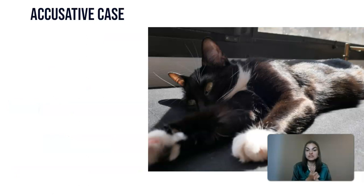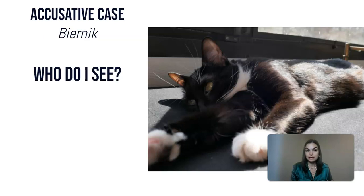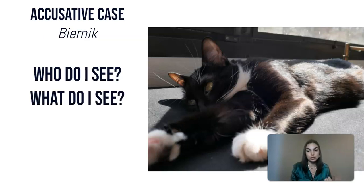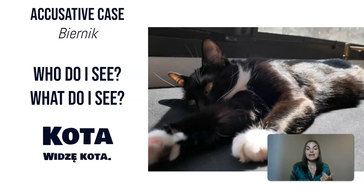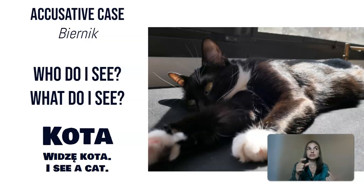Then we have the accusative case, which is known as Biernik. This answers 'who do I see' or 'what do I see.' The form is Kota. You will notice that sometimes the noun will repeat itself in the exact same spelling, but it's answering a very different kind of question, so keep that in mind.